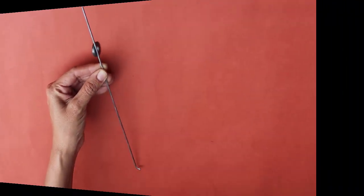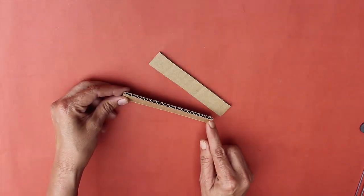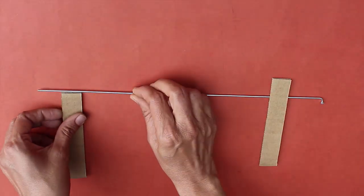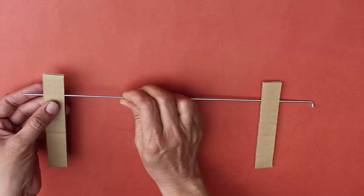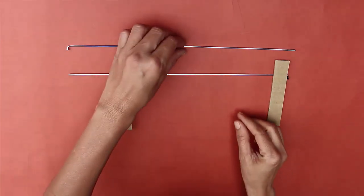The ring magnets will easily stick to the steel spoke. Take two strips of corrugated board and weave both the spokes through the boards so as to make a long and narrow rail track.